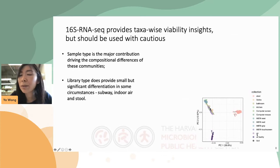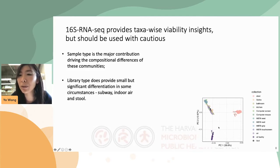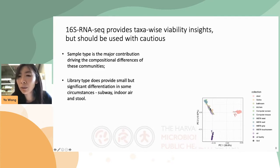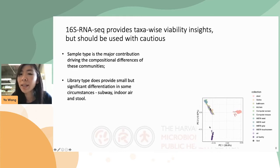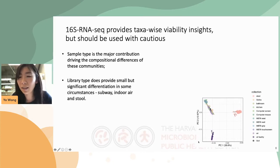To see if our findings were consistent with previous studies, we did a comparative analysis including several different datasets — samples from indoor surfaces like kitchen and bathroom, indoor air, oil facilities, and human stool. Overall, the results are just as expected. In the PCoA plot, samples clearly clustered by source, suggesting that sample type remains the most important contributor to community dissimilarities.